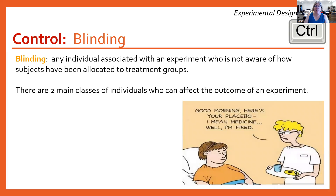This idea of people not knowing who's getting the actual medication and who's getting a fake medication is called blinding. Blinding is any individual associated with an experiment who is not aware of how subjects have been allocated or assigned to treatment groups.